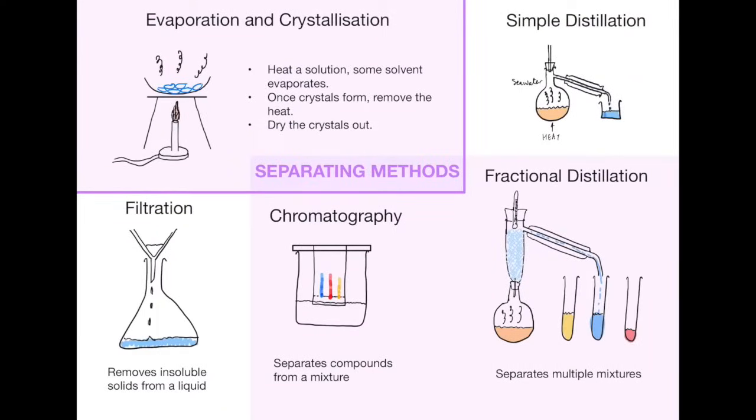There are five or six main separating methods that you need to know about and I've tried to do a nice diagram for each of them with some brief words just to explain them. So evaporation and crystallization I've kind of blended these into two because they kind of work hand in hand with each other. We've got an evaporating basin on top of a Bunsen burner and if you slowly heat up the solution it makes the solvent evaporate, and then by taking it off the heat the crystals will then form underneath it.